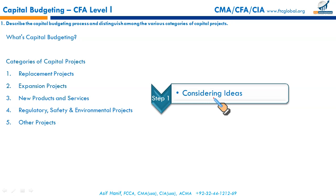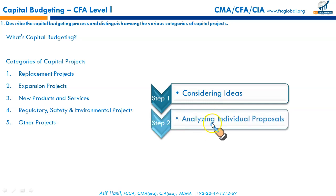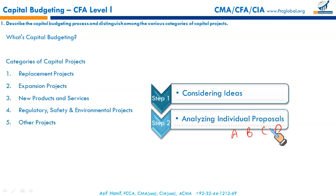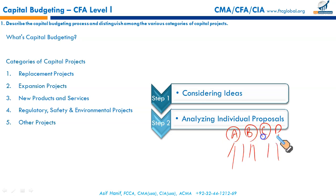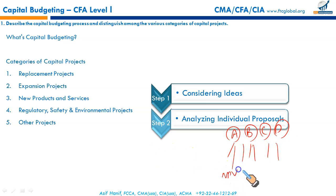The second step is analyzing individual proposals. We may have shortlisted four projects: A, B, C, D. We will forecast cash flows for each project separately — expected cash flows each year, initial investment. Each will be analyzed separately. Then we evaluate their profitability using various techniques: net present value, IRR, payback period, and discounted payback period. Using these tools, we will make our decision.